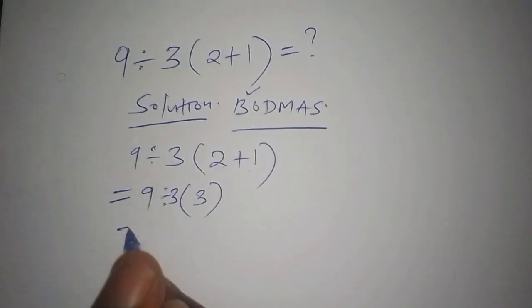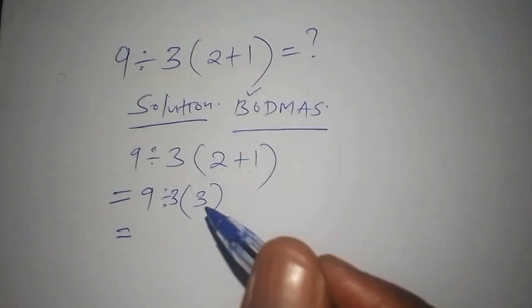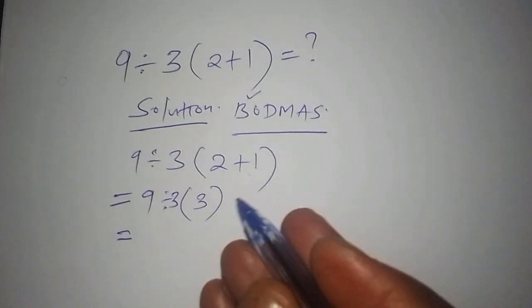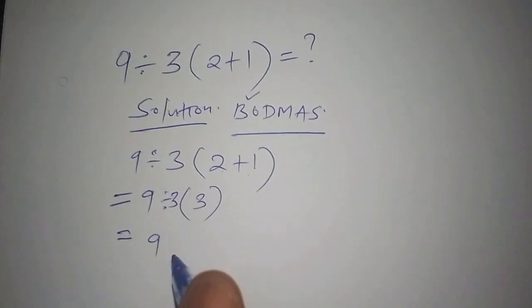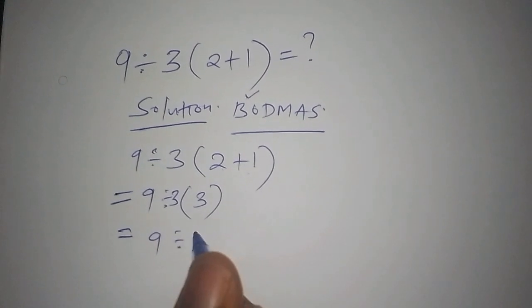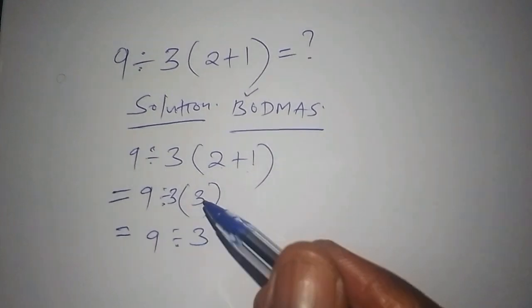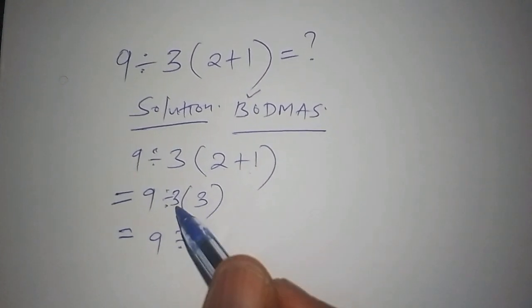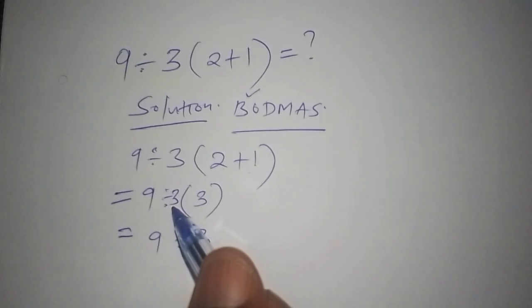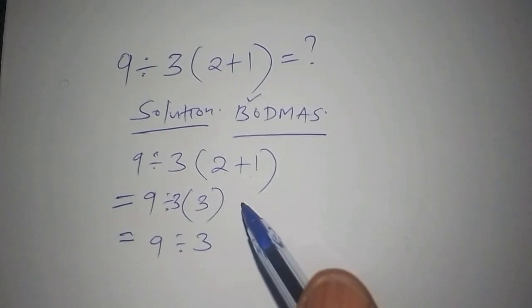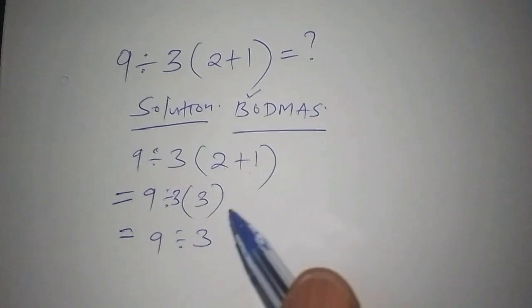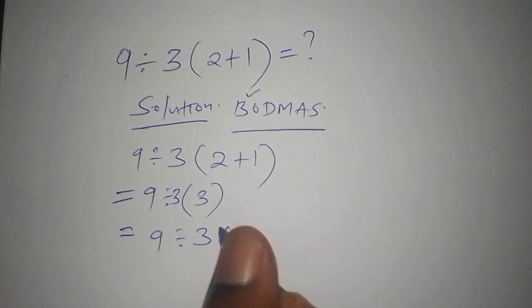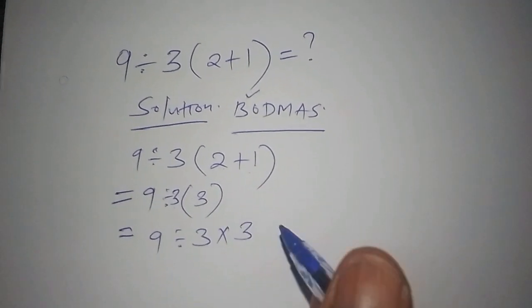The next part, we're going to open the bracket. So we shall have 9 divided by 3. When we open the bracket, we use the number outside to multiply with the number inside the bracket. So we shall have 3 multiplied by 3.